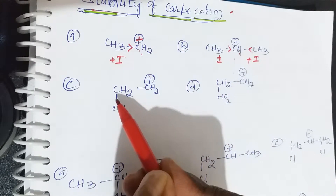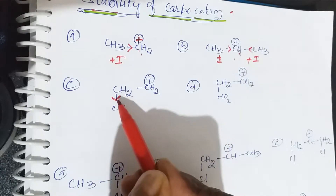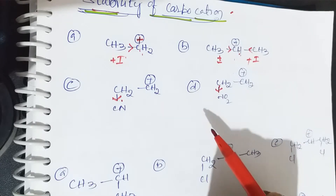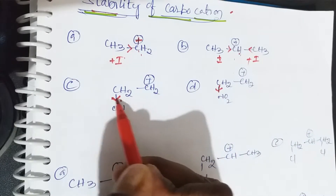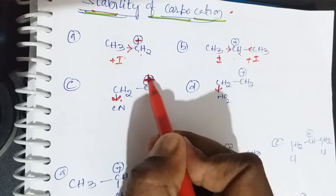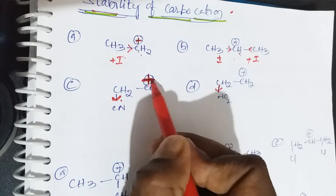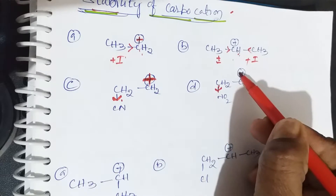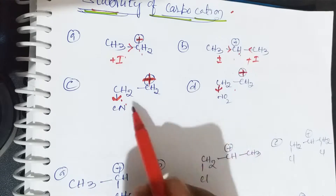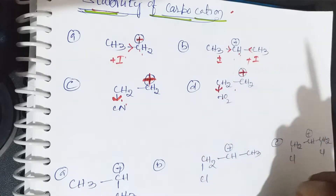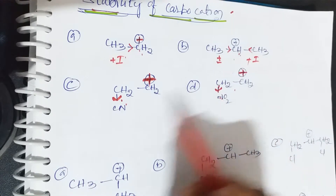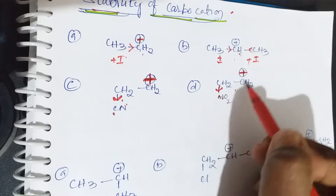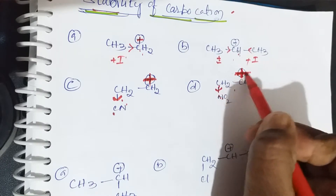Next, what is the role of CN? It is an electron withdrawing group. CN and NO2 are both electron withdrawing groups. In the presence of electron withdrawing groups, the positive charge increases. NO2 is a stronger withdrawing group than cyanide, so positive charge increases more, meaning lower stability.